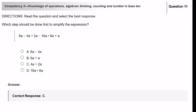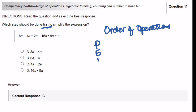Which step should be done first to simplify the expression? Again, this problem wants you to use the order of operations, but it's only asking you for the first step. Remember: Parentheses, Exponents, Multiplication and Division, Addition and Subtraction. Are there any parentheses? No. Exponents? No. Multiplication? Yes. Division? Yes. But we're reading from left to right, so the first thing that shows up is 4a divided by 2a — that's going to be our first step. So we're going to pick answer choice C.